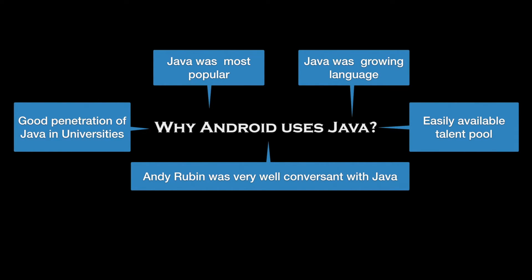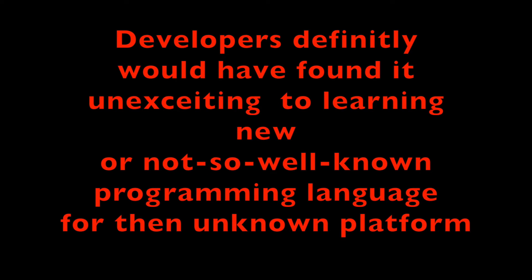And probably last but not least, Andy Rubin himself was very well conversant with Java — and he was the person who was finally going to make the decision on which programming language would be used for Android development. Think about what the reaction of the developer community would have been if Android had declared in 2005 that they were using a completely new programming language. Android was a completely unknown operating system, mobile apps were completely unknown entities, and I don't know what the reaction would have been to learning a new language for an unknown upcoming mobile operating system.